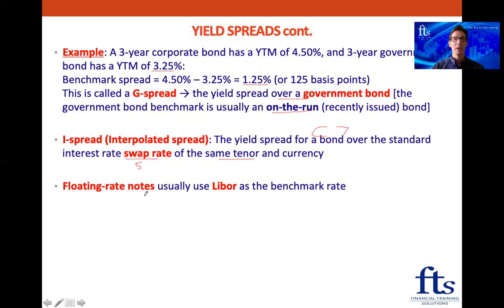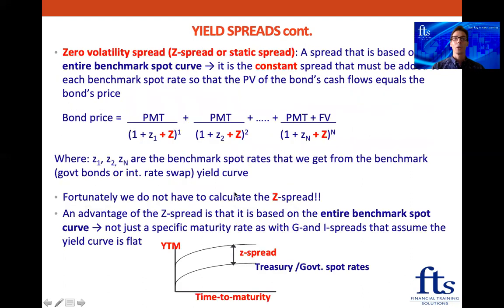For floating rate notes, they normally use LIBOR as the benchmark rate, although LIBOR is being phased out — expected to be phased out either end of 2021 or sometime in 2022, but for now we can still go with LIBOR. So now the last spread we need to look at is the zero volatility spread, also called the Z spread or the static spread. This is a spread that is based on the entire benchmark spot curve — the government spot rates.